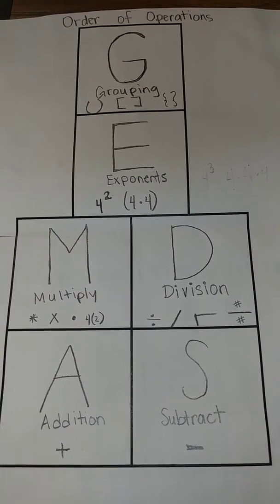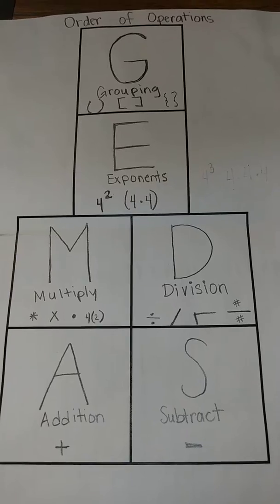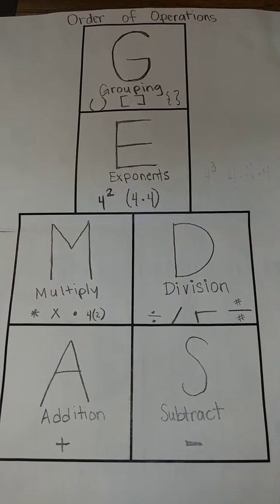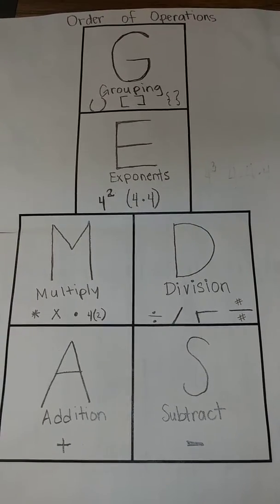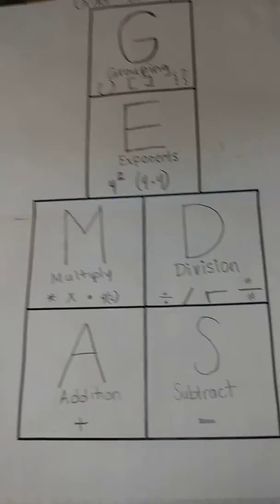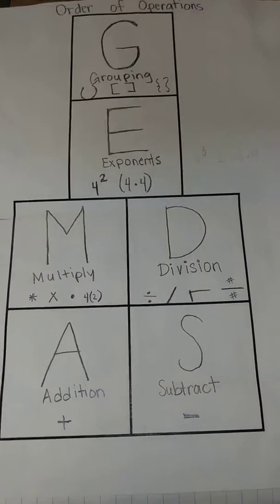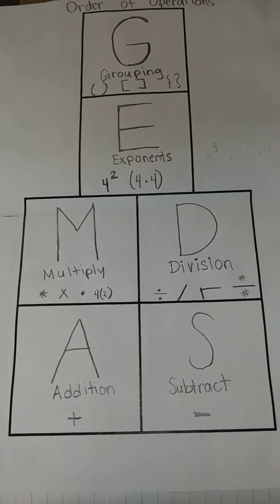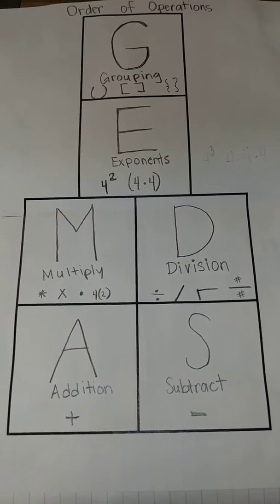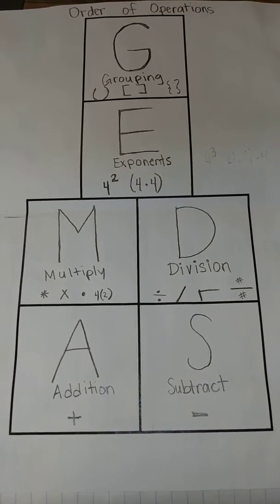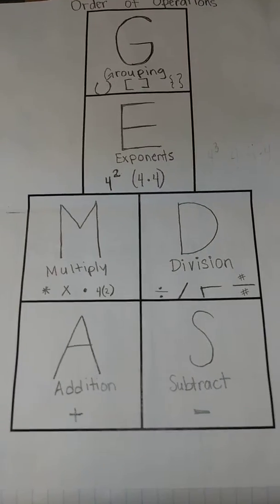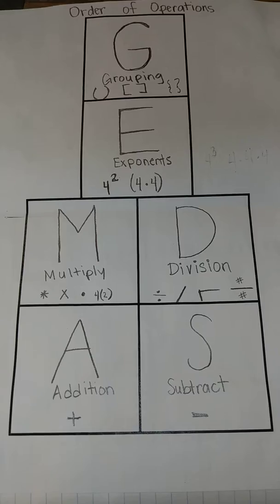You always start at the very, very top. G stands for grouping, which includes parentheses, brackets, and braces. Exponents, that is a sixth grade level strategy or skill. We do include it in fifth grade so that when the students do get to sixth grade, they are not just skipping over it. So exponents, I'm not going to focus too much on. Sorry, guys.